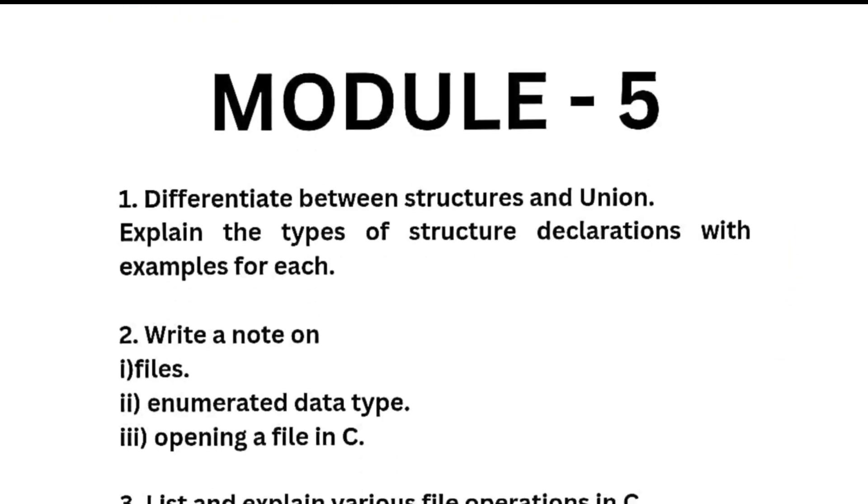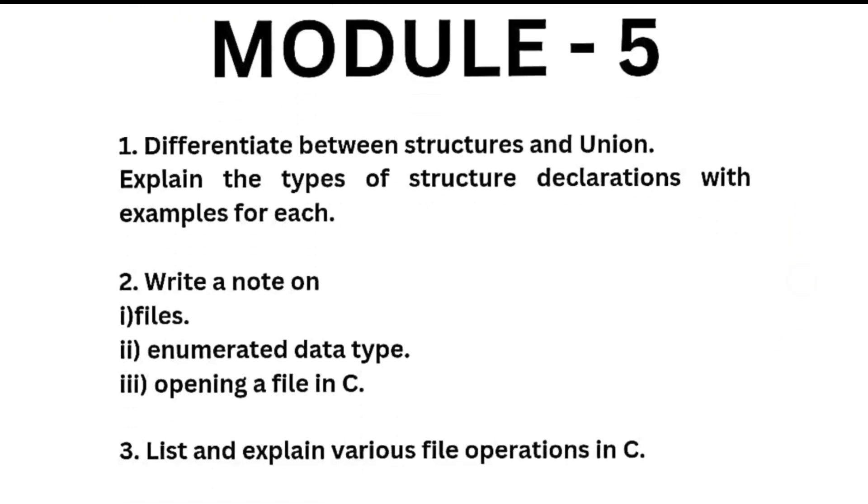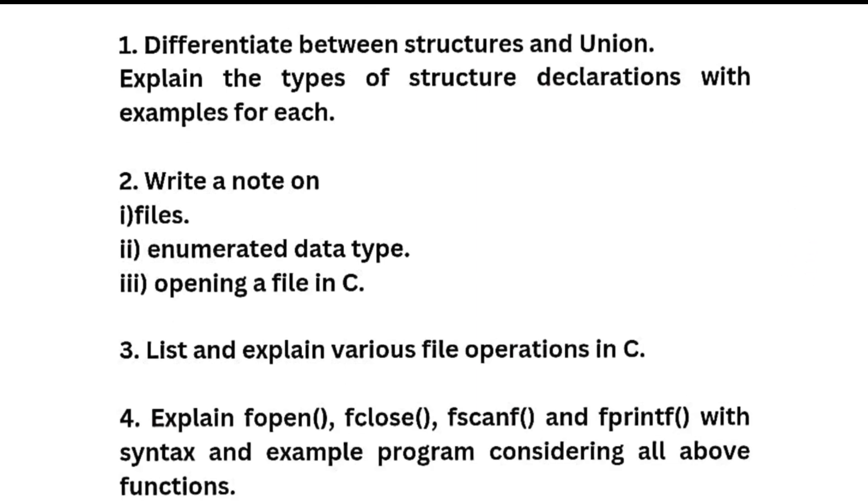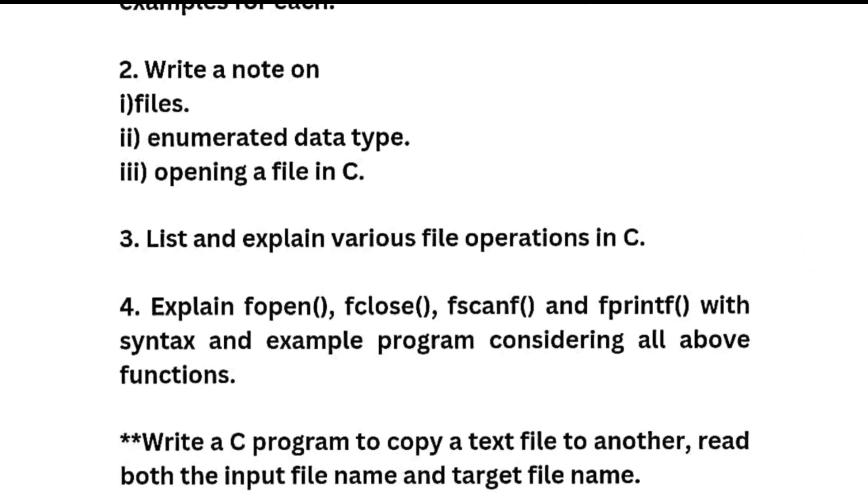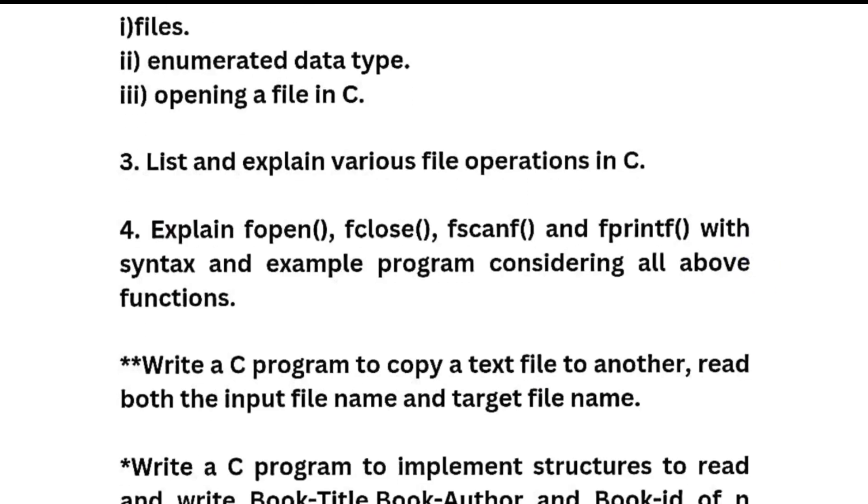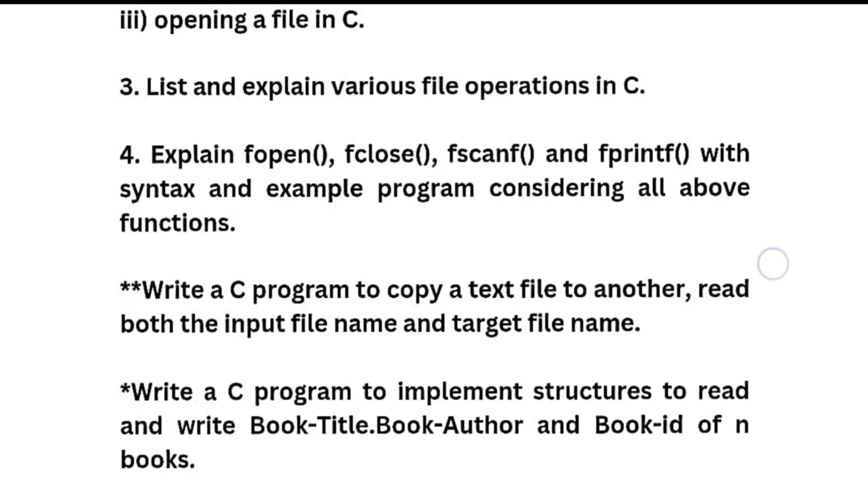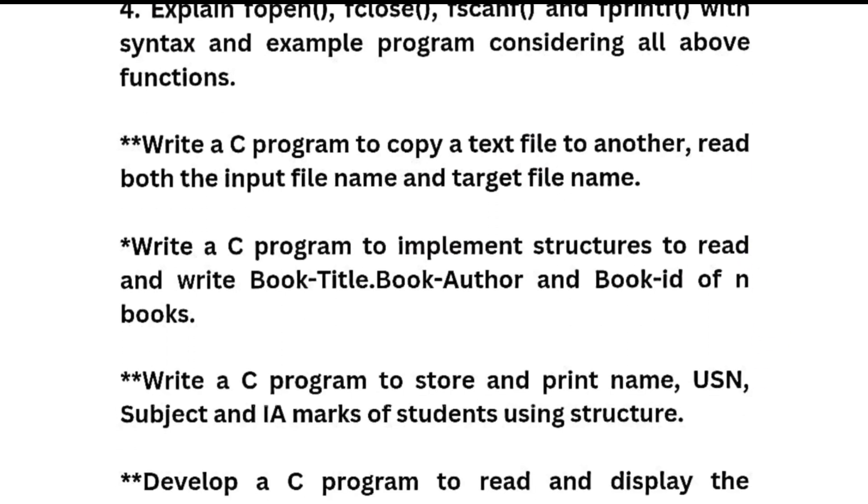Module 5 is here. Differentiate between structures and union, explain the types of structure declarations with example of each. Write a note on files, enumerated data type, opening a file in C. Third one: list and explain various file operations in C. Fourth one: explain fopen, fclose, fscanf and fprintf with syntax and example, a program considering all above functions.